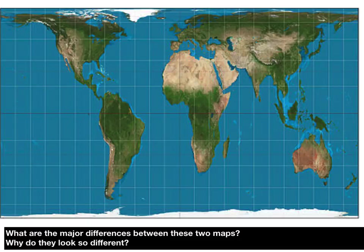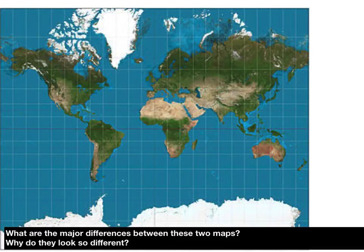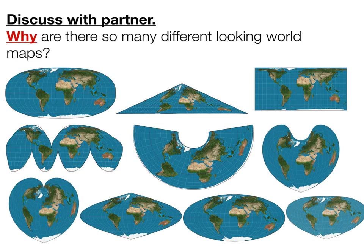So why are these maps so different? The reason they're different is because they're both projections — different projections of a round object, the earth, onto a flat surface. Something 3D has become 2D, so they're both different projections and they're both distortions. The reason there are so many different looking world maps is because when we create a map of the world, we're taking a 3D object and putting it onto a 2D surface, and that process is called a map projection.